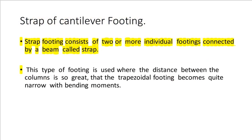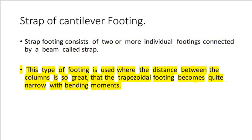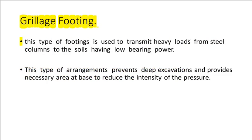Strap or cantilever footing consists of two or more individual footings connected by a beam called a strap. This type of footing is used where the distance between the columns is so great that a trapezoidal footing becomes quite narrow, resulting in bending moments from the footings.